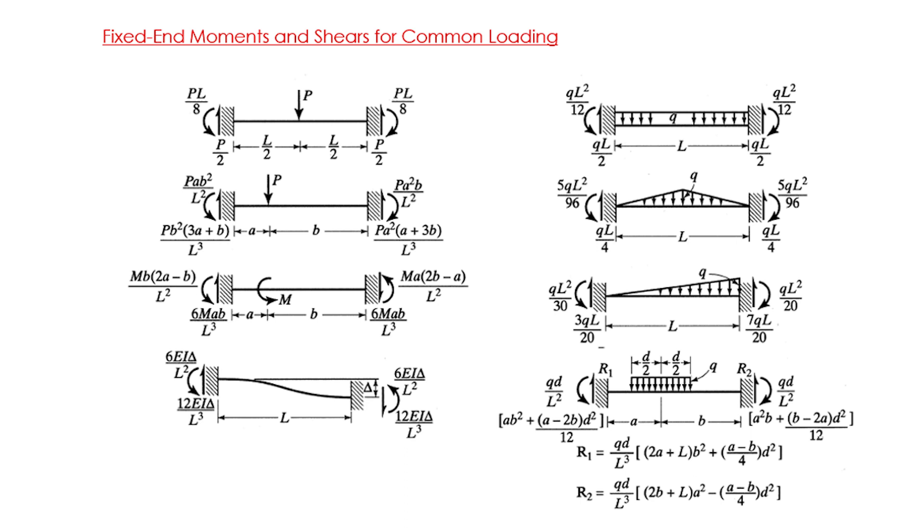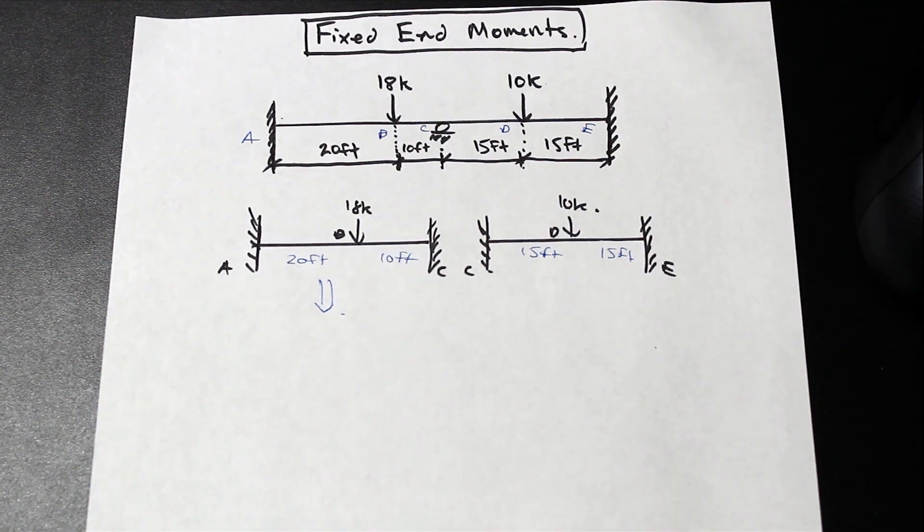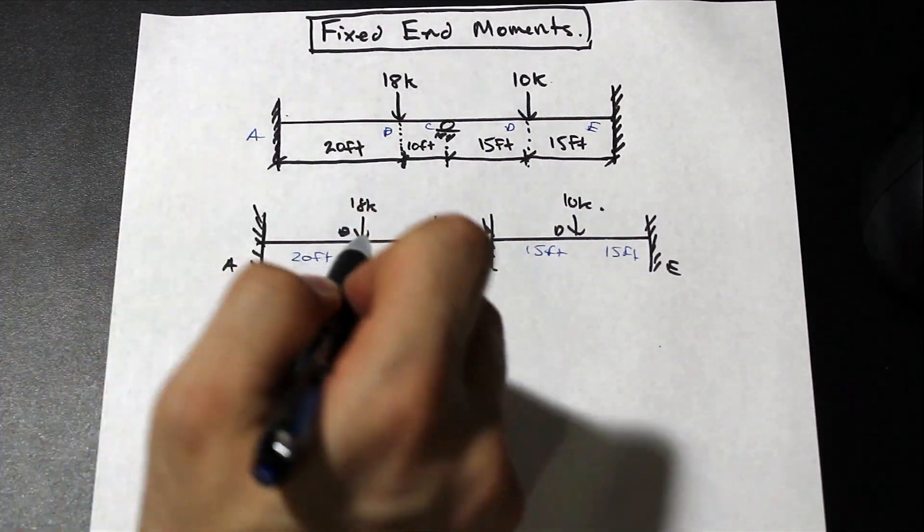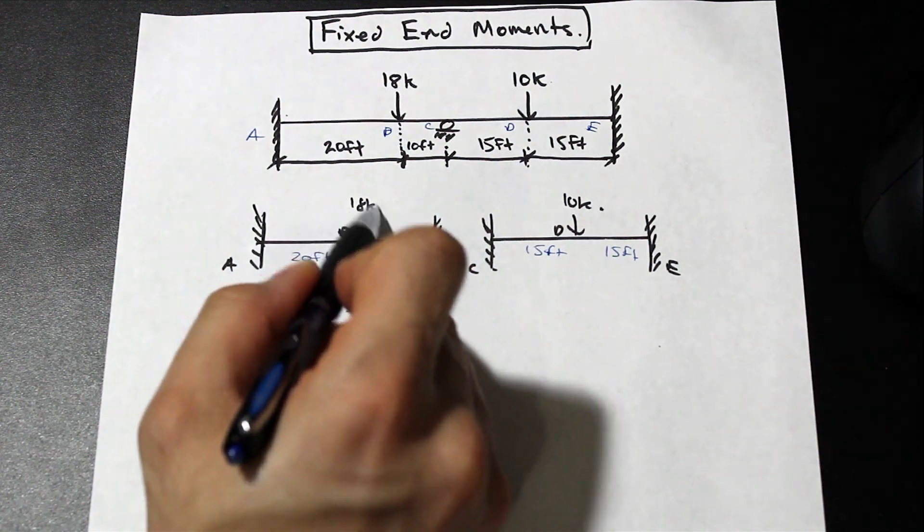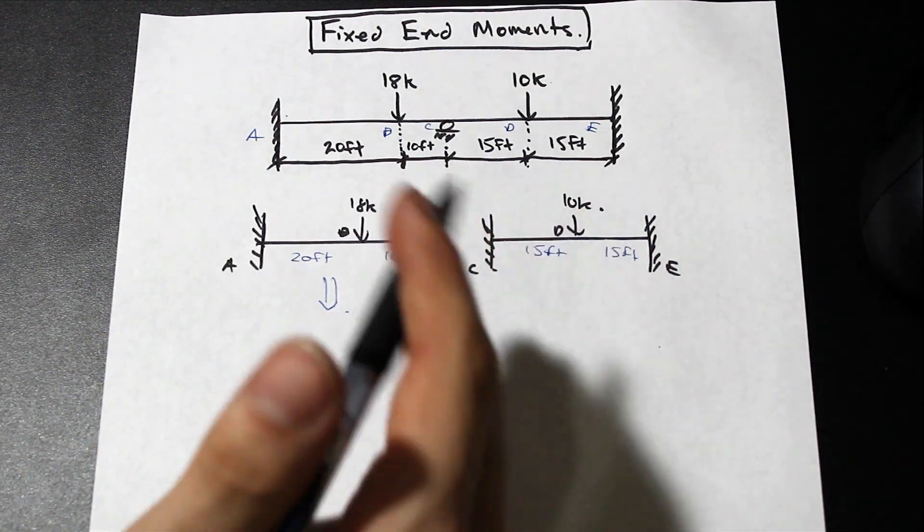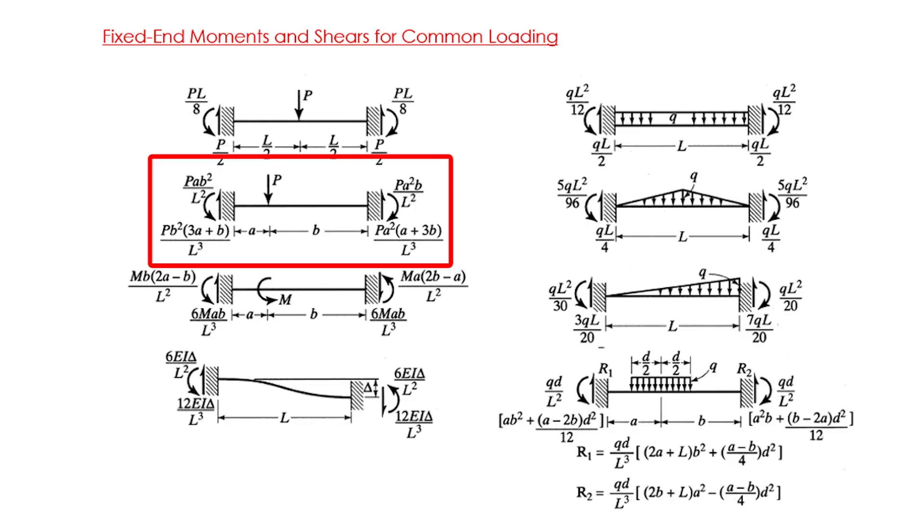Let's take a look at the first one here. We're gonna come down here and solve this one. As we can see, we have a point load here that is not in the center of the beam. The first step is to recognize that on the table that is actually the second example. We just need to identify what is a and what is B and plug it in. So as you can see, P a B squared over L squared is for the moment on the left side.